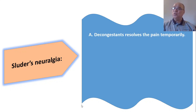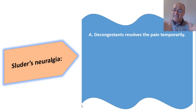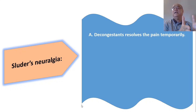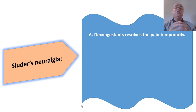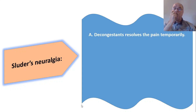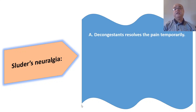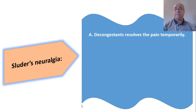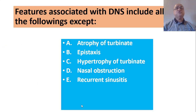Using nasal decongestants temporarily can relieve the pain of Sluder's neuralgia because it will cause the middle turbinate to shrink and stop pressing on the nasal septum. Sluder's neuralgia is synonymously known as anterior ethmoidal neuralgia, meaning the anterior ethmoidal nerve is involved. Pain is localized to a single area on the face, usually on the bridge of the nose, and is described as a shooting or very sharp pain, typical of neuralgic pain.